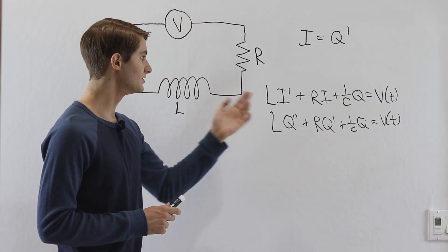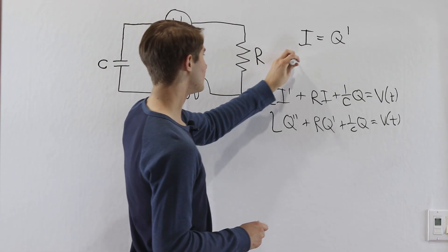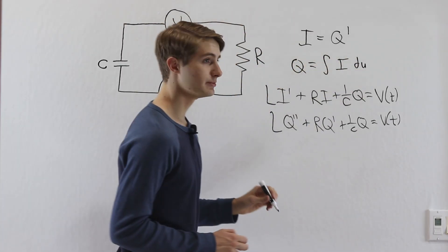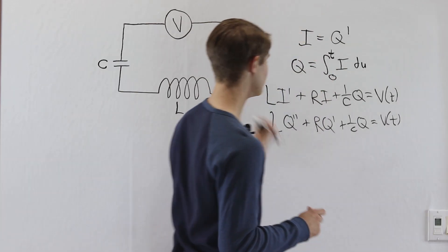But we can also write this a different way. If we know that I is the derivative of Q, we can also write that Q is the integral of I with respect to some variable u with the lower bound of 0 and the upper bound of T.